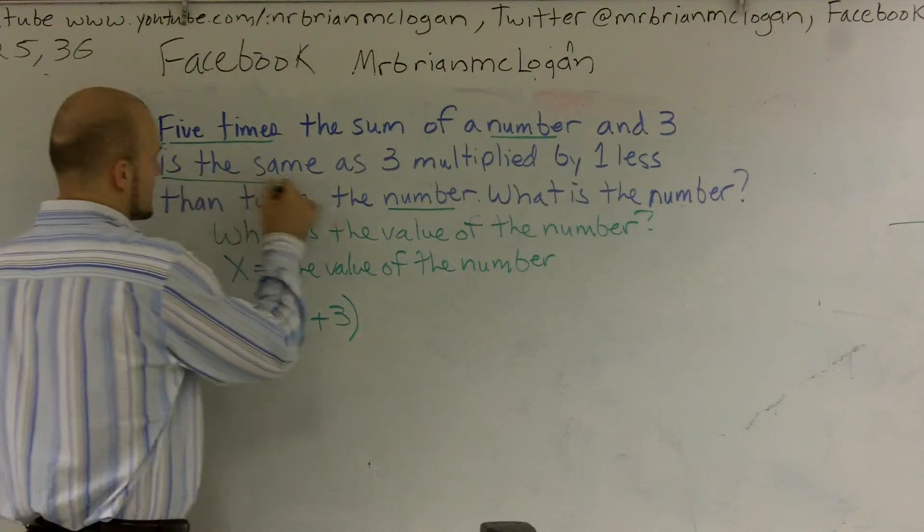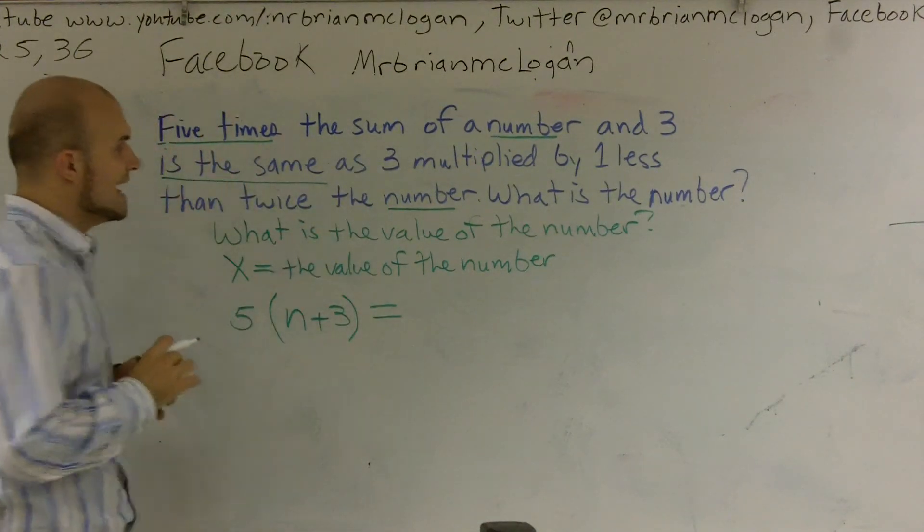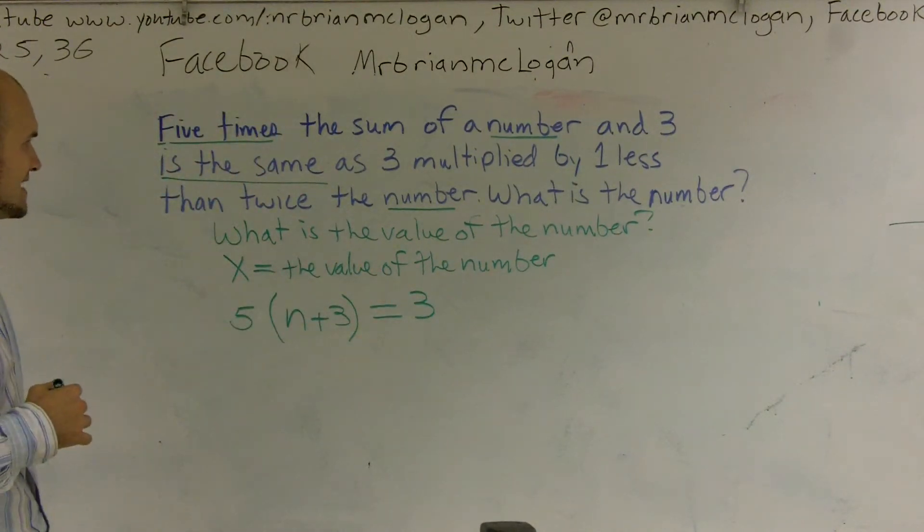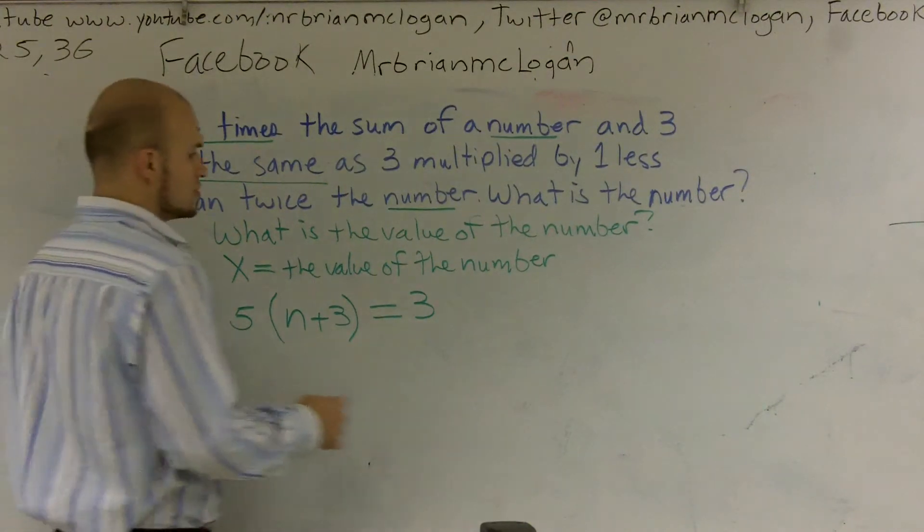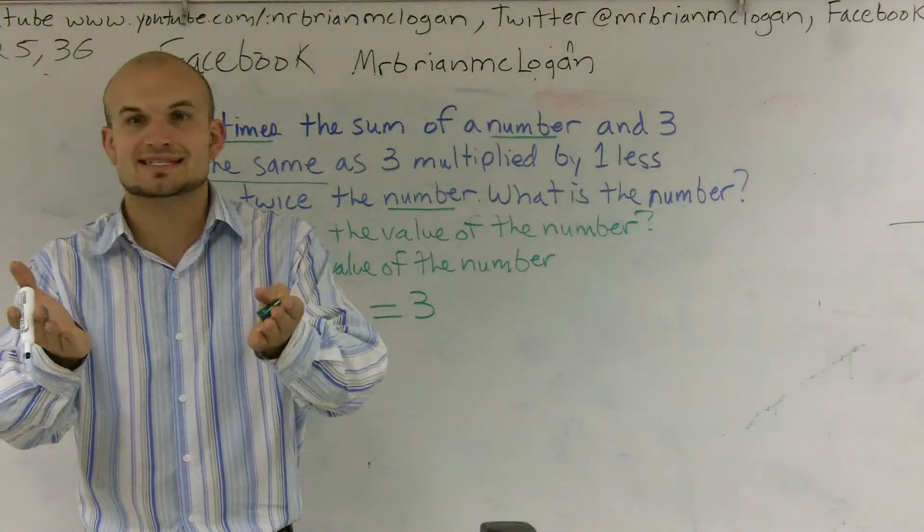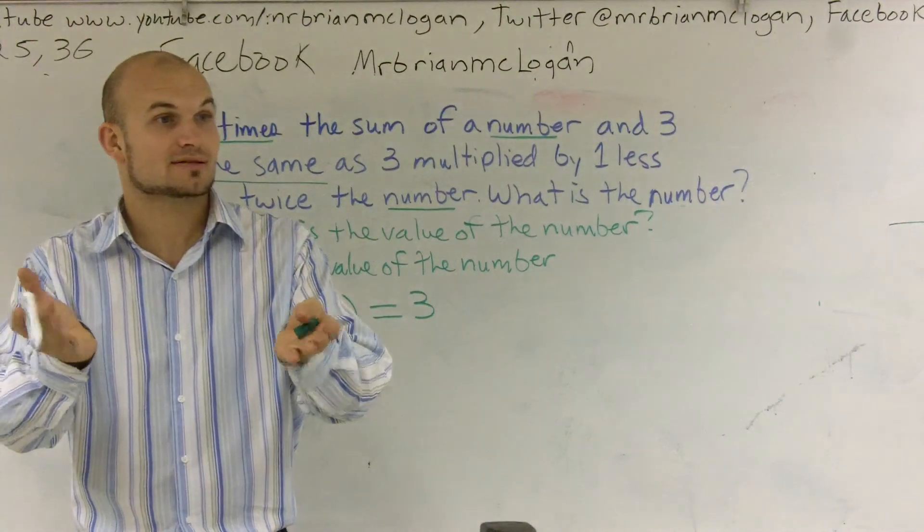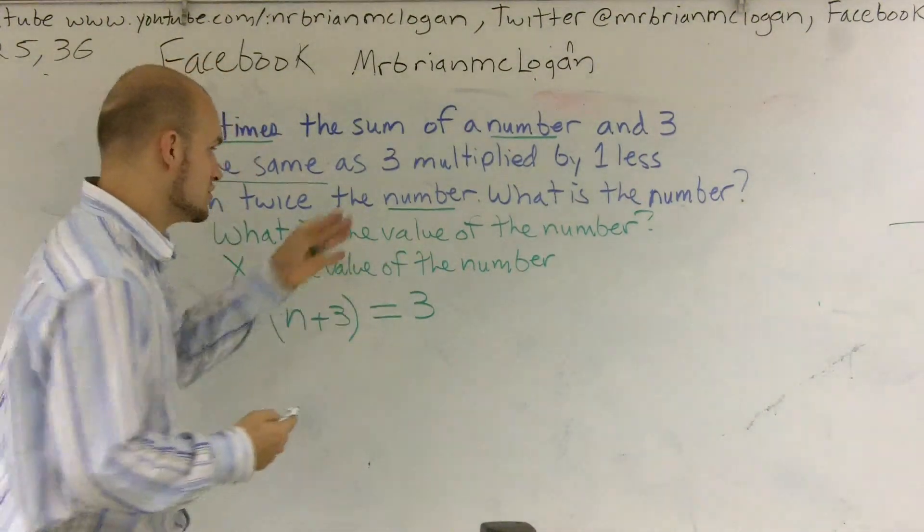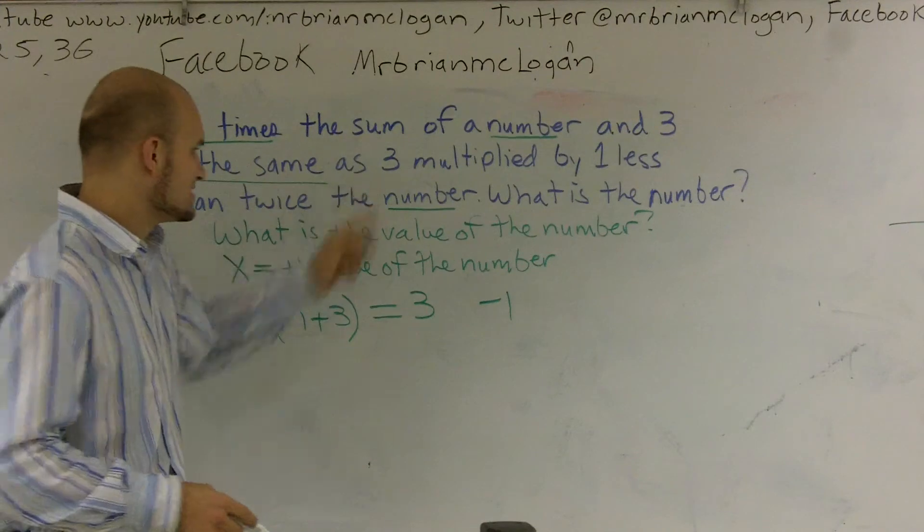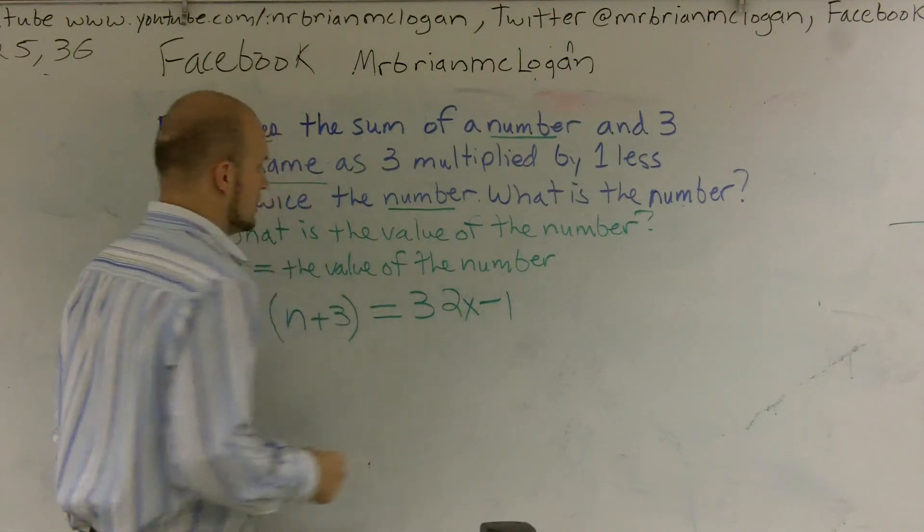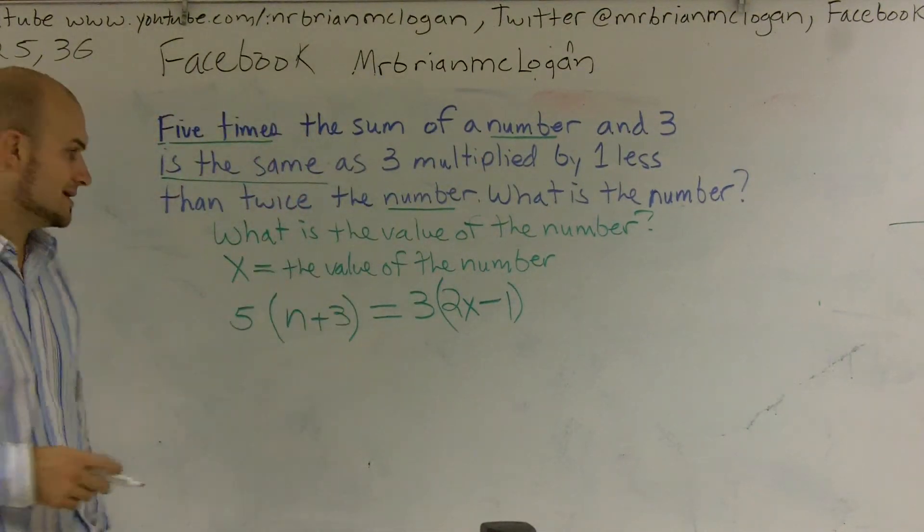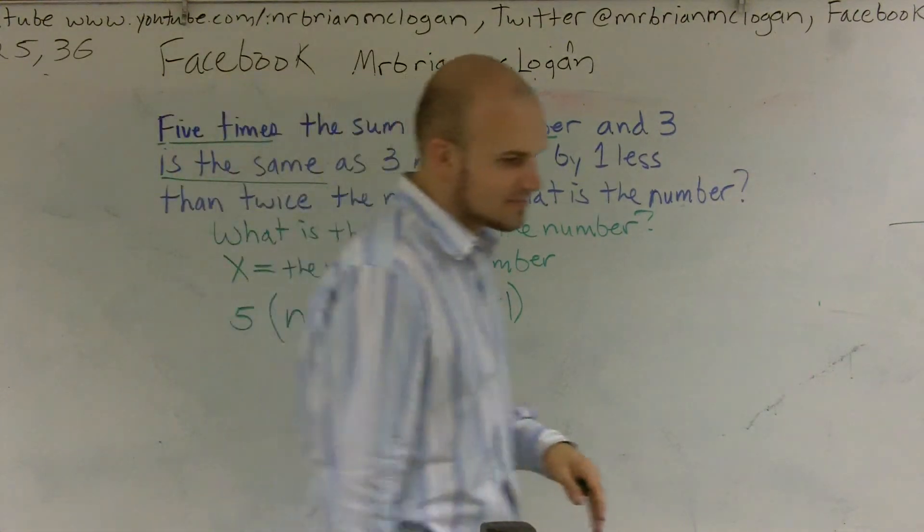So it's 5 times the sum of x plus 3, 5 and 3, is the same as, that tells me to equal, as 3 multiplied by 1 less than twice the number. So it's 1 less. So if I have $30, and you have 1 less dollar than me, then you have $29, correct? Because you take whatever I have and you subtract 1. So 1 less means I'm going to subtract 1. But what am I subtracting 1 from? 1 less than twice the number. And 3 is multiplied by all of that. So again, it's the same kind of technique. Now, I have two parentheses on both sides.